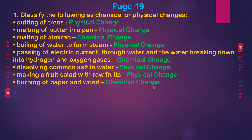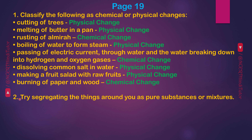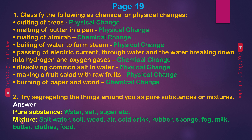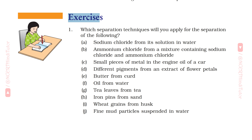7th — Wood: chemical change. Question 2: Try segregating the things around you as pure substances or mixtures. Answer — Pure substances: water, salt, sugar, etc. Mixtures: salt water, soil, wood, air, cold rubber, sponge, fog, milk, water, clothes, food.